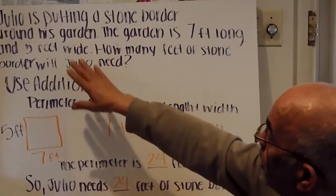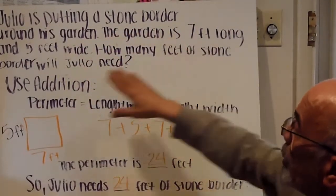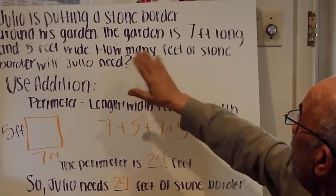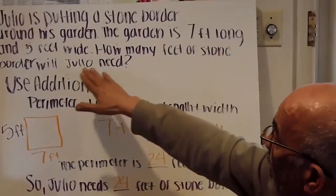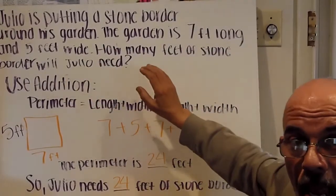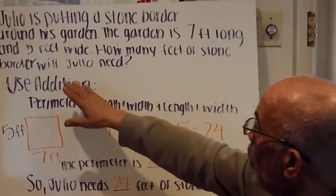Let's look at this word problem. Julio is putting a stone border around his garden. The garden is seven foot long and five foot wide. How many feet of stone will Julio need?